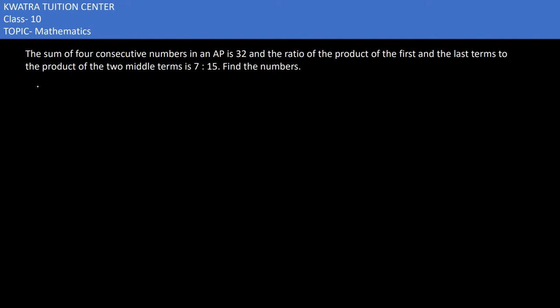Now here in the third part it says we have sum of four consecutive numbers in an AP is 32. The ratio of the product of the first and the last term to the product of the two middle terms is 7 to 15. Find the numbers.